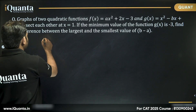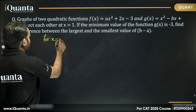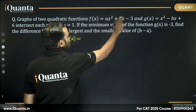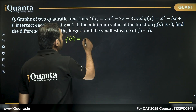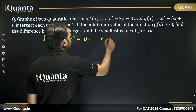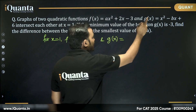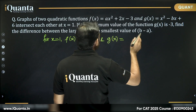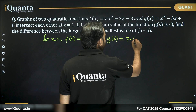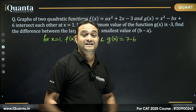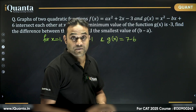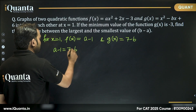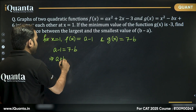So if I put x = 1 into f(x): a + 2 - 3 = a - 1. And g(1) = 1 - b + 6 = 7 - b. Since both functions intersect at x = 1, their outputs are equal, so a - 1 = 7 - b, which gives us a + b = 8.